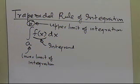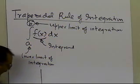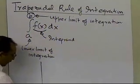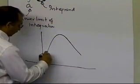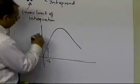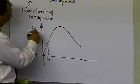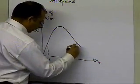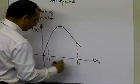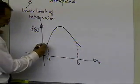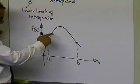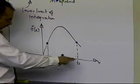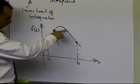So if we want to find it approximately, one of the things we can do is look at it graphically. Let's suppose if I have a function like this, and somebody says they want you to integrate from a to b. So this is my function f of x as a function of x, and this is b. You have the value of the function here and here — the area under the curve is all the area from a to b under this curve.